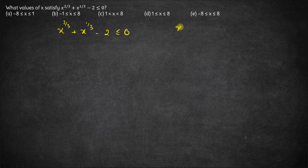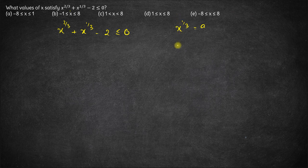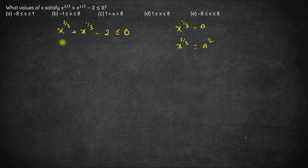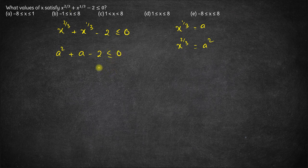Now let us assume x to the power 1/3 is a. So squaring this we get x to the power 2/3 is a squared. Let's substitute both these here: a squared plus a minus 2 is less than or equal to 0.